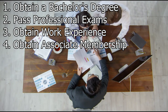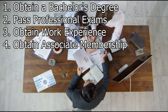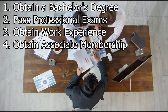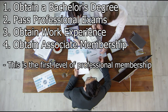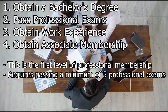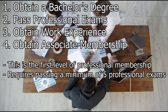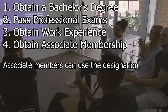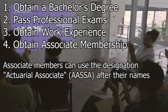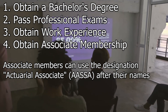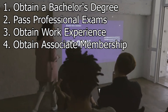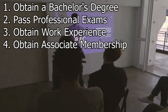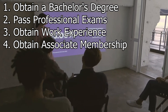Step 4 - Obtain Associate Membership. After passing a set of ASSA exams, you can apply for associate membership of the ASSA. This is the first level of professional membership and requires passing a minimum of five professional exams. Associate members can use the designation Actuarial Associate, AASSA, after their names. Associate membership demonstrates that you have a strong foundation in actuarial science and are committed to a career in the profession.